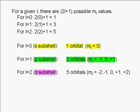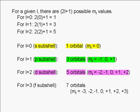We can define a d subshell as a set of 5 orbitals. We can say that d orbitals come in sets of 5. And we can define an f subshell as a set of 7 orbitals. We can say that f orbitals come in sets of 7.